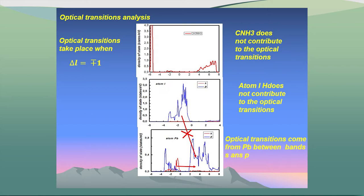As you can see, close to the Fermi level — Fermi level is taken as reference at zero — the contribution from the organic part is so far from the Fermi level. So there is no transition; this part doesn't contribute. The Pb density of states doesn't contribute either to the transitions.